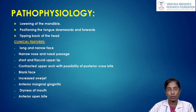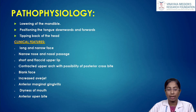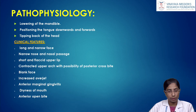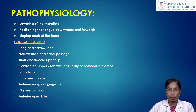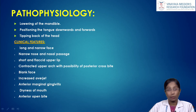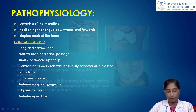Clinical features commonly seen in mouth breathers include long narrow face (leptoprosopic face), narrow nose and nasal passage, short flaccid upper lip, constricted upper arch with possibility of posterior cross bite, blank (expressionless) face, increased overjet, anterior marginal gingivitis due to dryness of the mouth caused by mouth breathing, anterior open bite, and gummy smile.